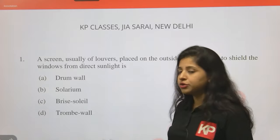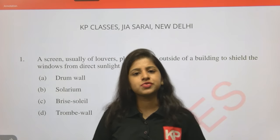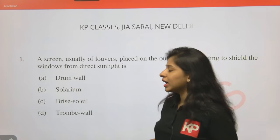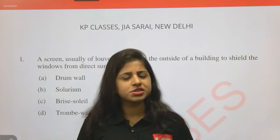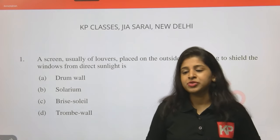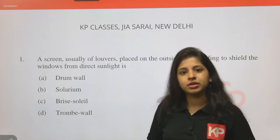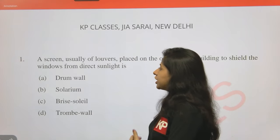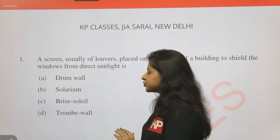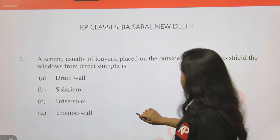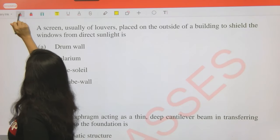In today's session we are solving the CPWD previous year question paper of 2019 for the post of assistant architect. There are 120 questions and it will take four sessions to cover everything in detail. We'll have sessions today, tomorrow, and Sunday. We will look into each question and answer, and also try to understand the other options present. So without any further ado, let's start with the first question.